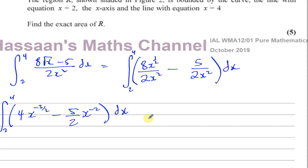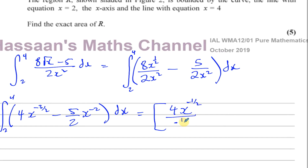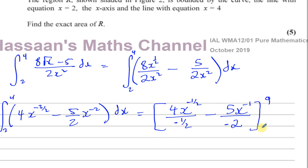Now it's ready to be integrated. Using square brackets with limits, I add 1 to each power: minus 3 over 2 plus 1 gives minus a half, then divide by the new power minus a half. For the second term, adding 1 to the power gives minus 1 divided by minus 1, and multiplying by 2 gives minus 2 in the denominator. Limits 4 and 2 are written on the right side of the square brackets.